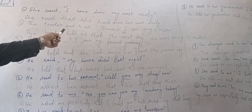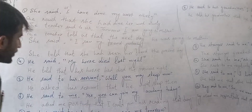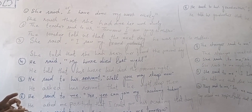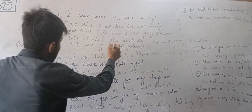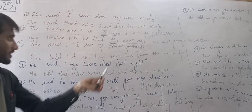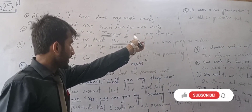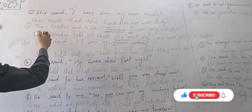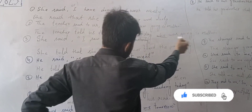The teacher said to us: 'Tomorrow I am going to Multan.' The teacher told us that the next day he was going to Multan. You can see the changing of tense. 'Tomorrow' changes to 'the next day' and 'I am going' changes to 'he was going.'